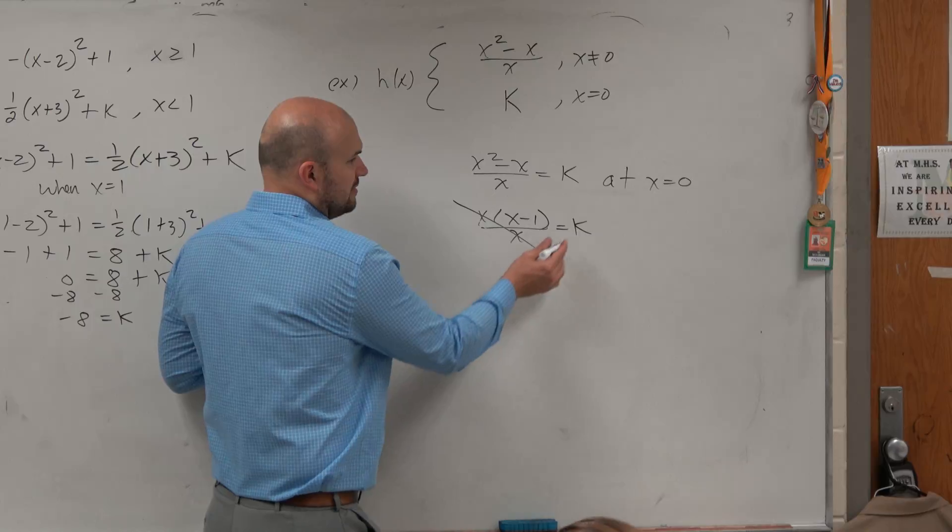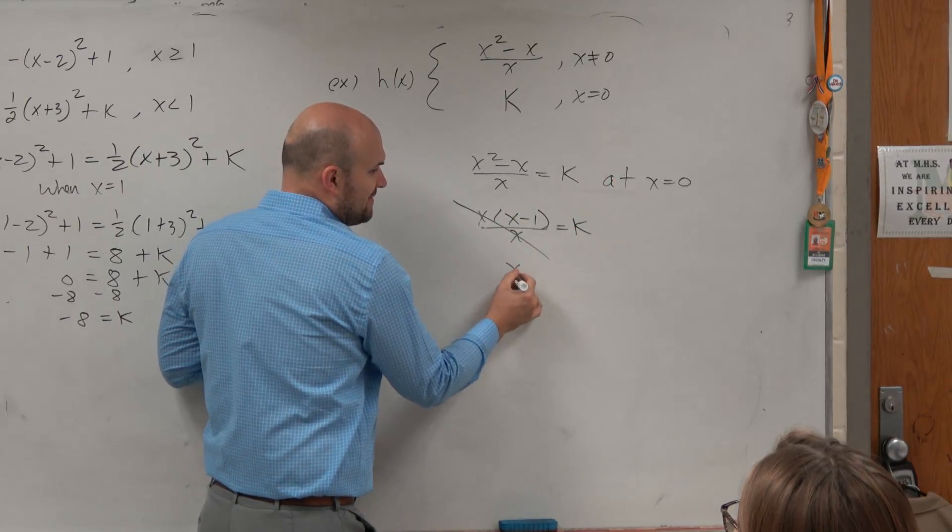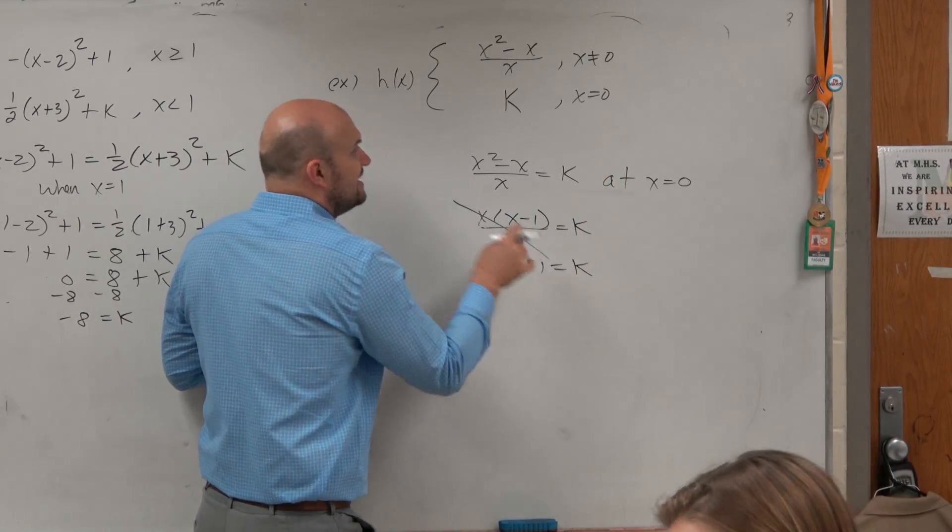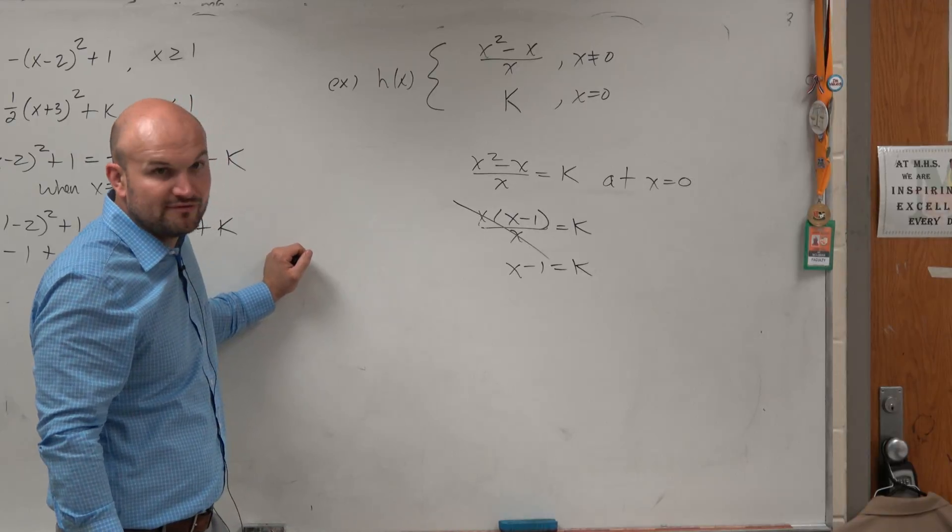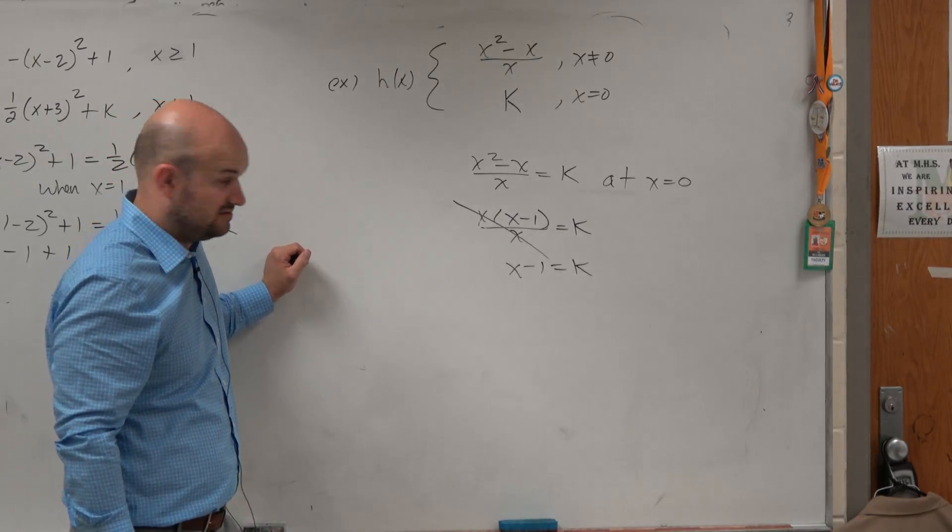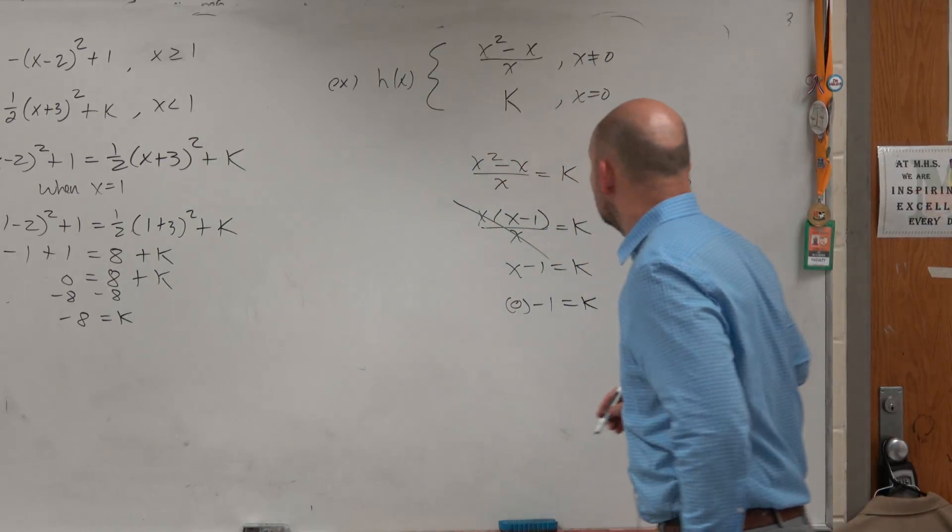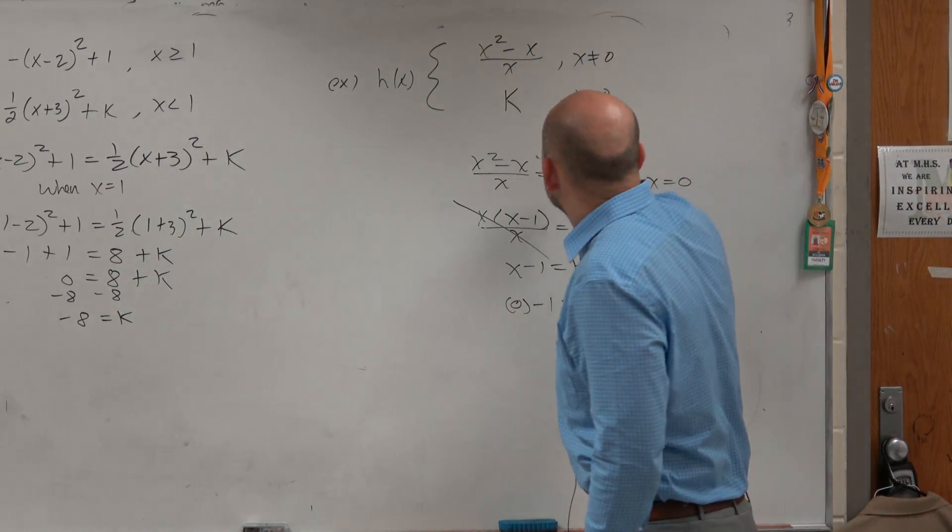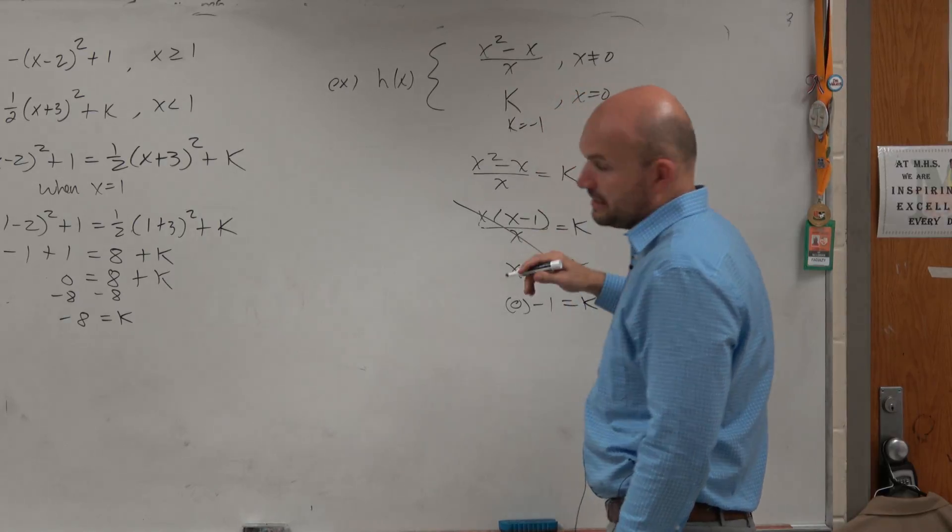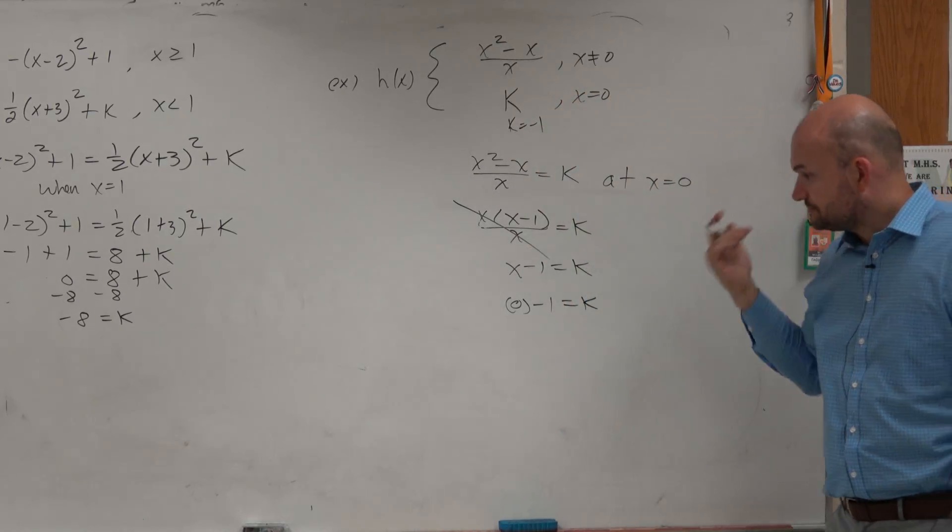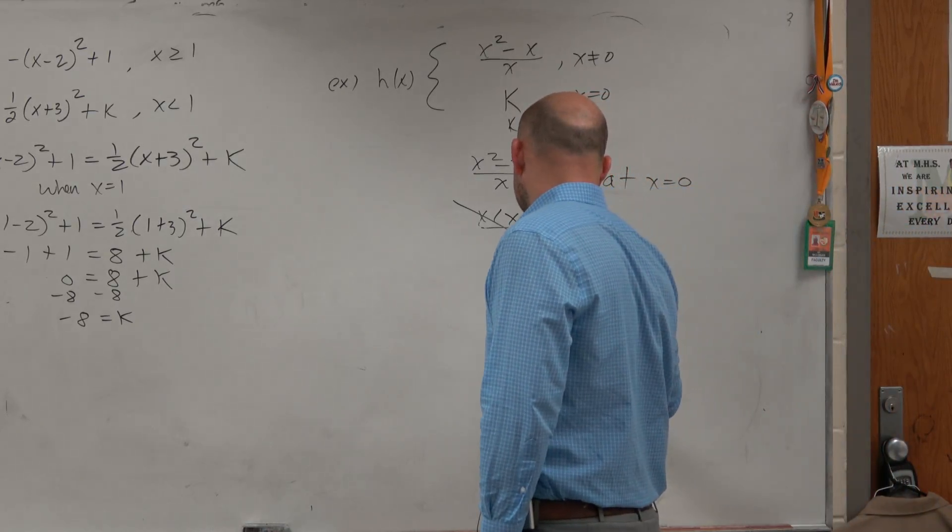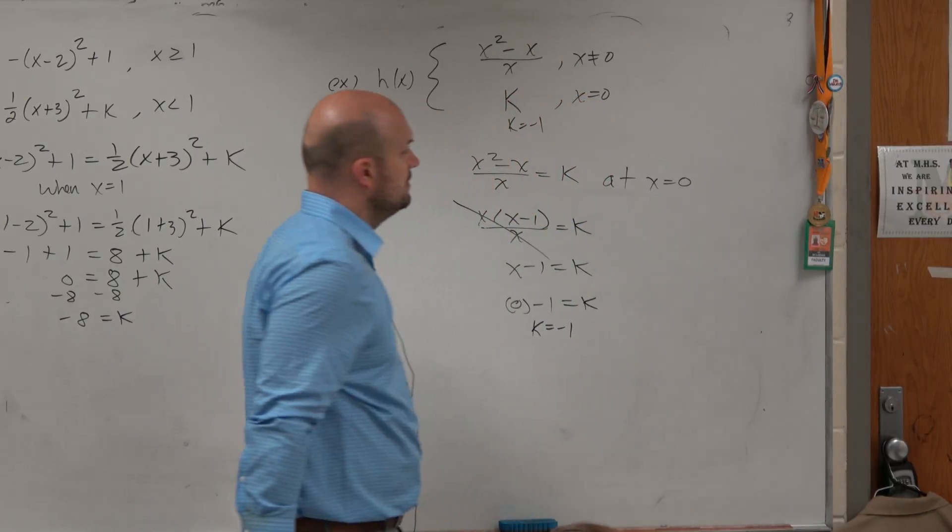So therefore, now can we plug? We have x minus 1 is equal to k. Now, can we plug 0 in for x to solve for k? And it's pretty easy to mathematically solve for k right now, isn't it? So we can say k is equal to negative 1. All right?